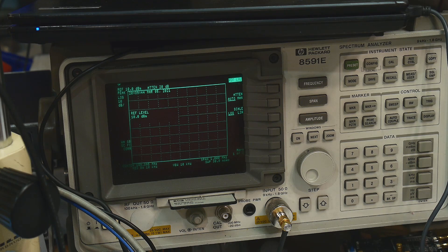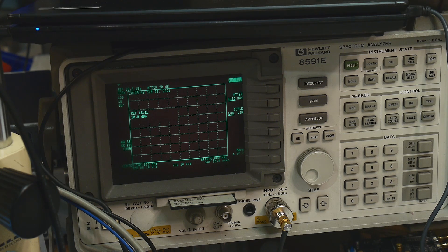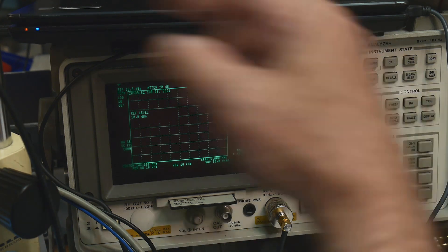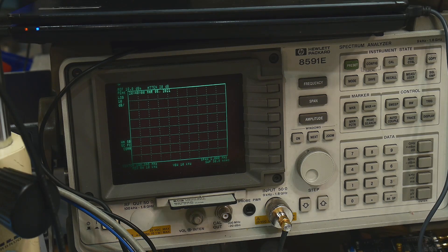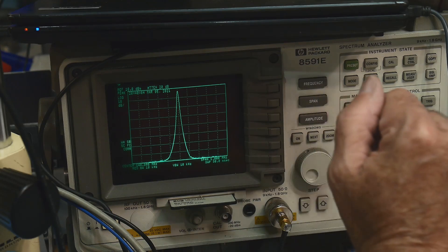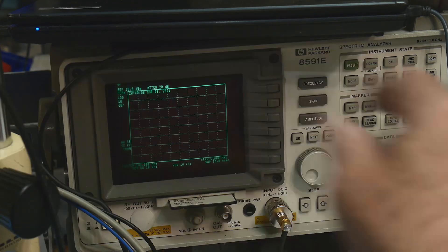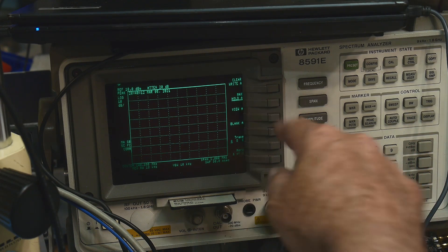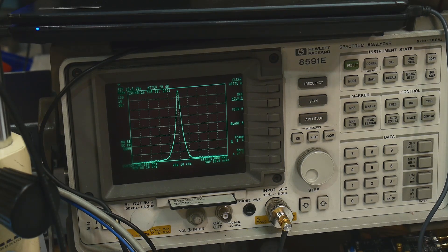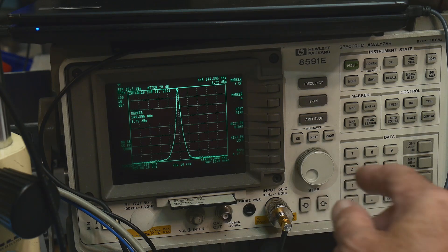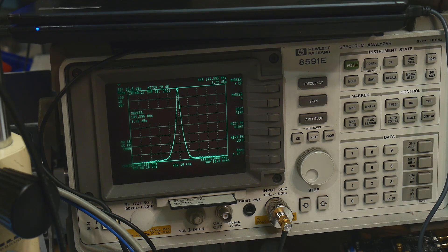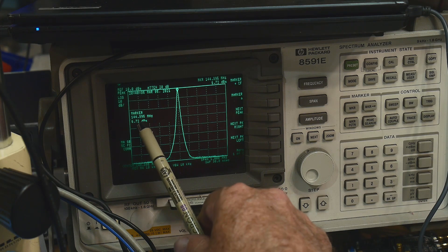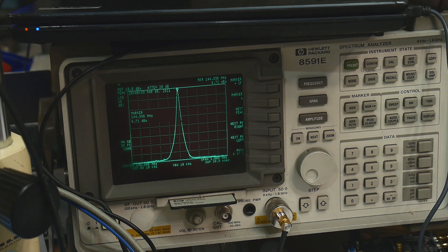And let's go ahead and do a hold. Display hold. Maybe that's not the way to do it. Trace. Max hold. All right. That's another way to do it. Then we can make some measurements here. We can do a peak search. So let's write this down. Our peak is at plus 6.72 dBm. And our frequency is at 144.395. So perfect frequency. And we now have a power measurement.